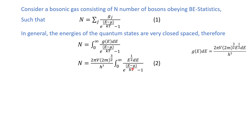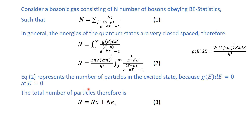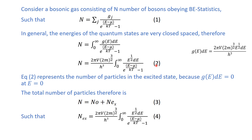Equation number 2 represents the number of particles in the excited state, because g(E)dE equals zero at E equals zero — so this integration excludes the number of particles in the ground state. Therefore, the total number of particles N equals the number of particles in the ground state N0 plus the number of particles in the excited state N_ex.